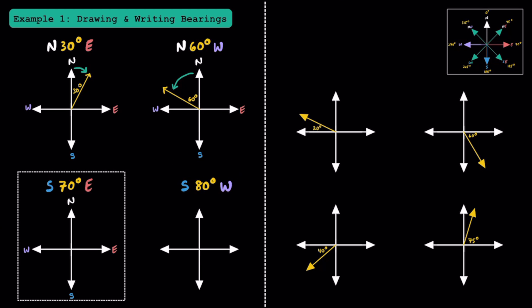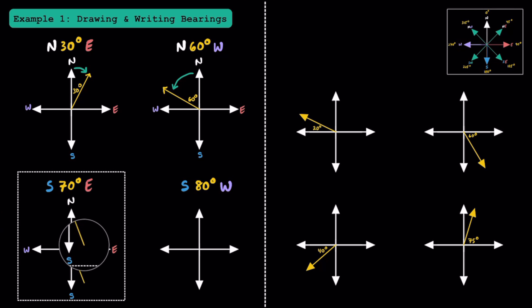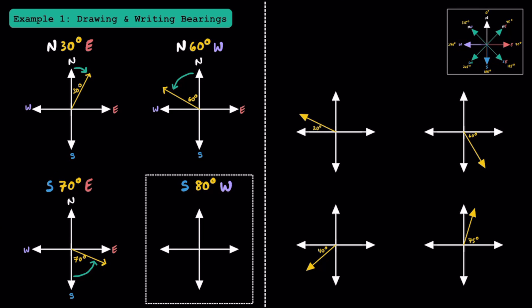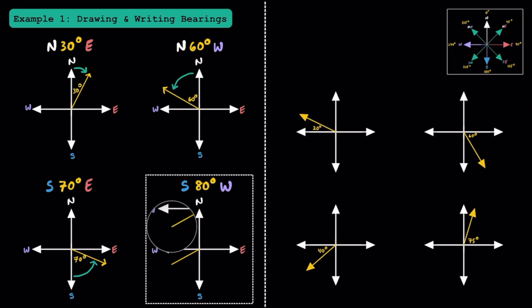Now let's try south 70 degrees east. This time we start by pointing down towards the south and move 70 degrees towards the east — there's our drawing. Let's try one more: south 80 degrees west. Since we're given south first, we start down there and move 80 degrees towards the west direction — right about here. We started in the south and moved 80 degrees towards the west to get our drawing.